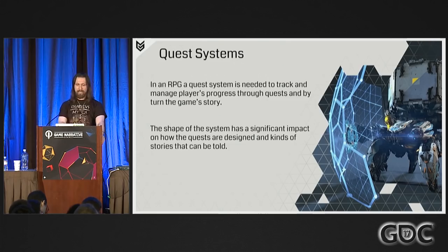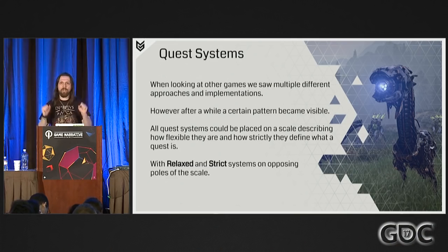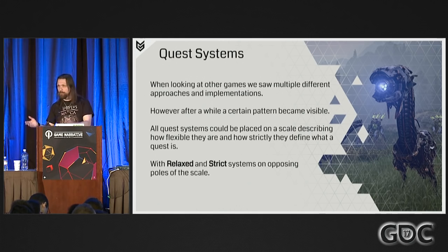Guerrilla Games used to specialize in first-person shooters and action games, so when we set out to build Horizon, we had nothing of this sort. In order to fill the gaps in our knowledge, we decided to look at games that came before and how other teams approached this particular problem. When looking during pre-production at various games, we found multiple very different approaches, but all of them could be placed on a scale describing how flexible they are — with systems we could call 'relaxed' on one extreme and systems we could call 'strict' on the opposite extreme.